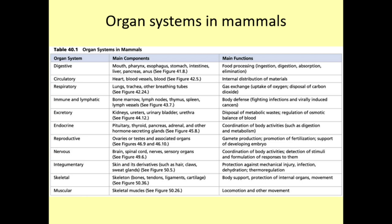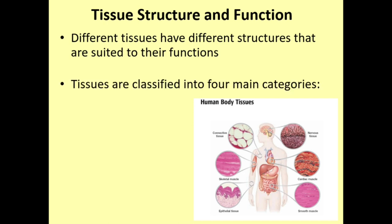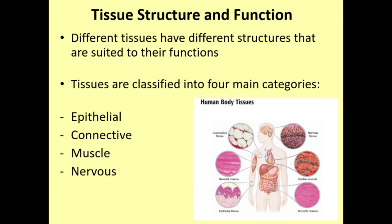Structure equals function — we see this with biological molecules, with cells, and with our tissues. Different tissues have different structures suited to their functions. As we've established, tissues are classified into four main categories: epithelial, connective, muscle, and nervous. We're now going to go through each one and talk about the structure and function of each.